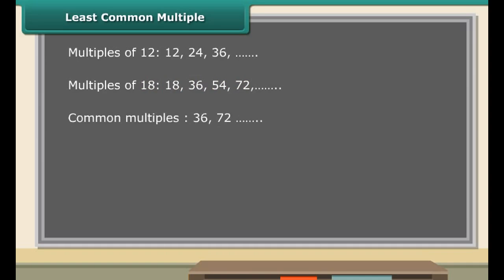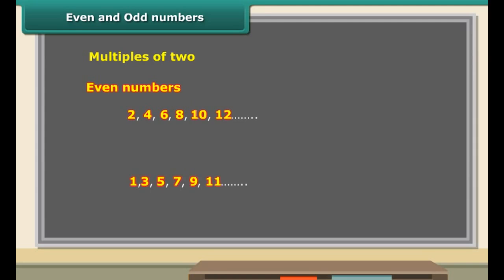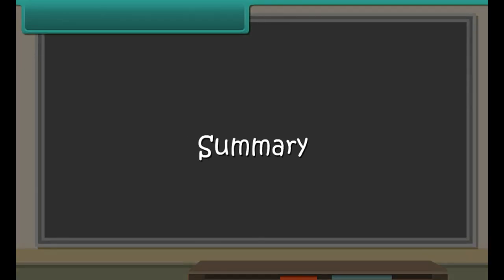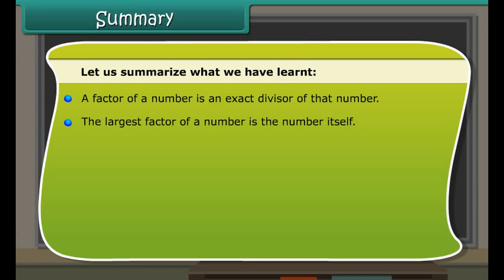Recall that common multiples of two numbers are those numbers which are multiples of both. Let us now use this knowledge to find the least common multiple of two numbers. Consider 12 and 18. The multiples of 12 are 12, 24, 36, and so on. The multiples of 18 are 18, 36, 54, 72, and so on. The common multiples of both numbers are 36, 72, and so on. But 36 is the smallest among these.